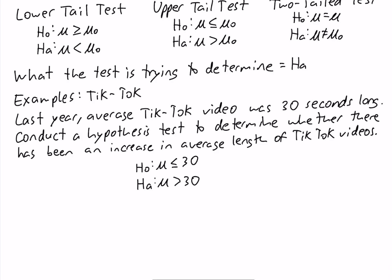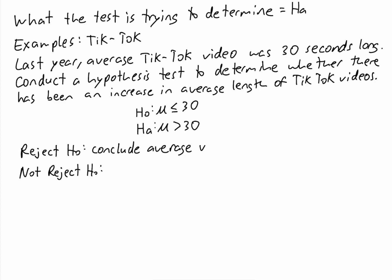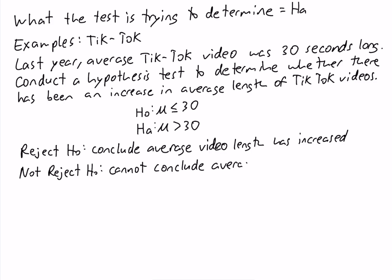There are two possible conclusions in our hypothesis test: either we decide to reject the Null, or we decide to not reject the Null. In hypothesis testing, we do not say 'accept the Null' — instead we say 'do not reject the Null,' and this has to do with Type 1 and Type 2 errors. If we reject the Null in this example, that means we conclude that the average video length has increased. If we do not reject the Null, we cannot conclude that the average video length has increased.